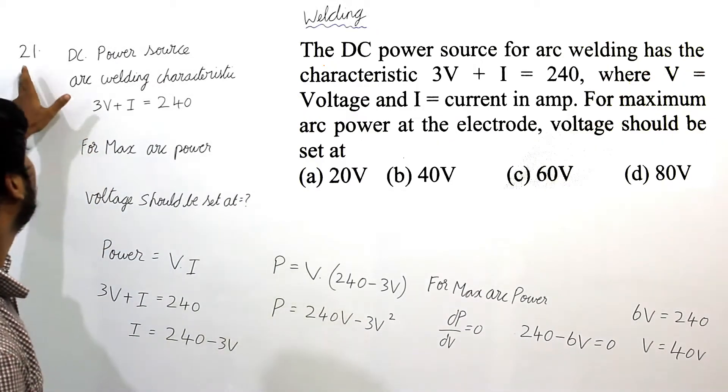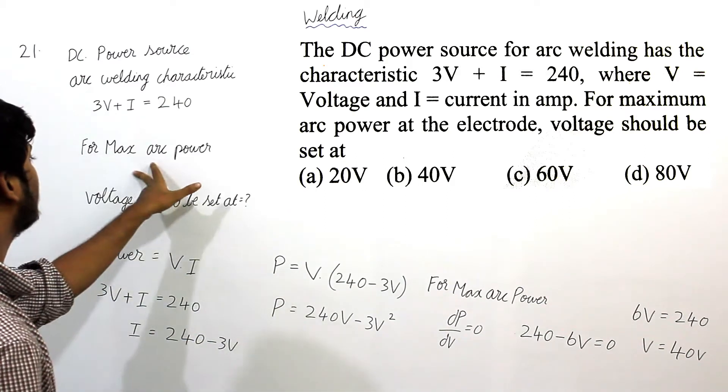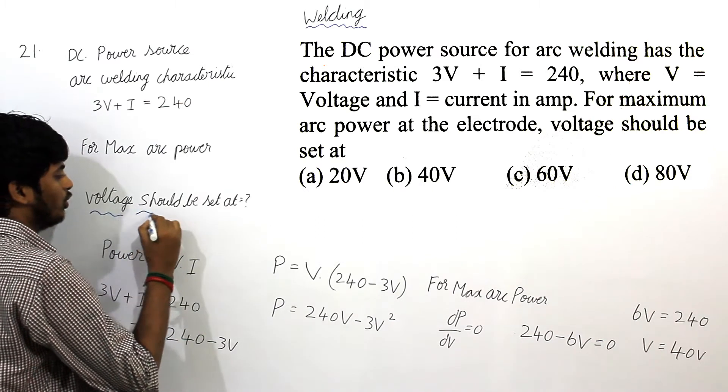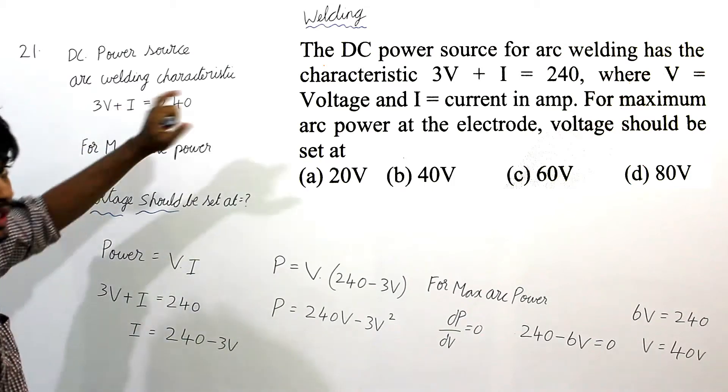Under welding process, the 21st problem asks us to find the voltage that should be set for maximum arc power at the electrode.